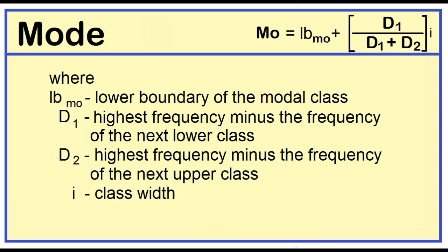Mode is equal to the lower boundary of the modal class plus the product of the quantity d sub 1 over d sub 1 plus d sub 2, times the class width. D sub 1 is the highest frequency minus the frequency of the next lower class, d sub 2 is the highest frequency minus the frequency of the next upper class, and i is the class width.